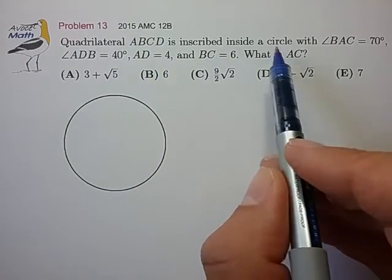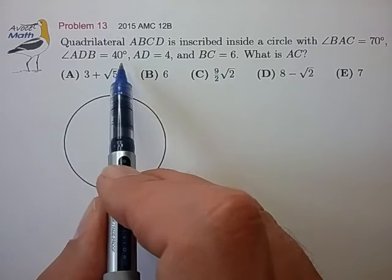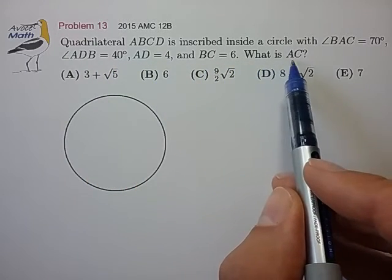Quadrilateral ABCD is inscribed inside of a circle with angle BAC of 70 degrees, angle ADB of 40 degrees, length AD of 4, and BC of 6. What is the length of segment AC?